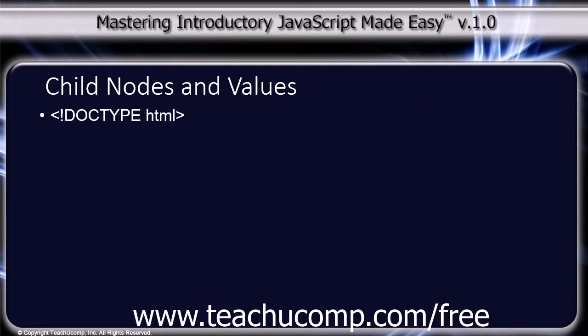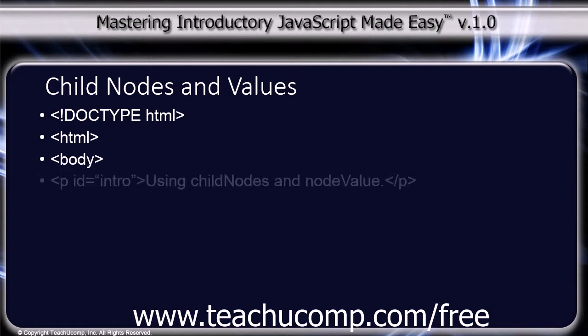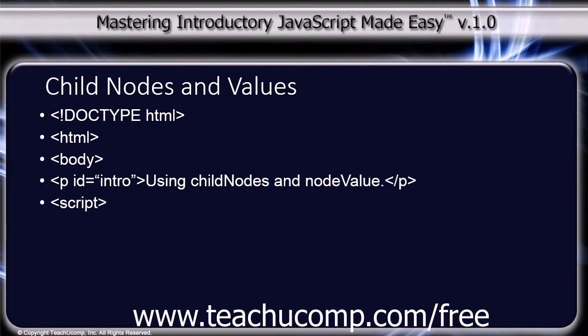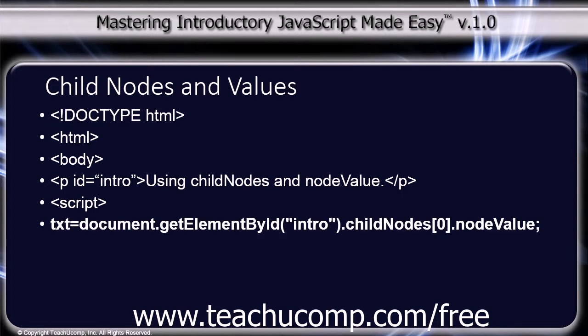So we have the doctype tag, html tag, body tag, a paragraph tag with an ID of 'intro' containing the text 'Using childNodes and nodeValue', closed paragraph, script tag, then: txt = document.getElementById('intro').childNodes[0].nodeValue; followed by document.write(txt);